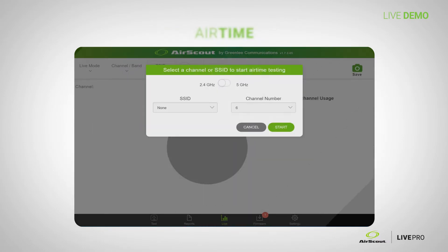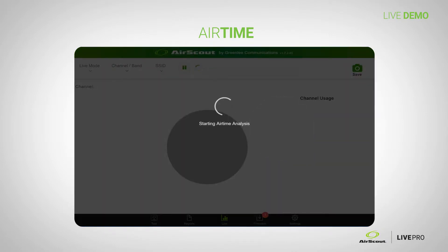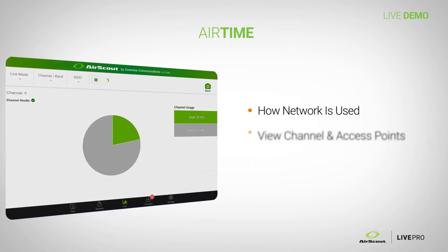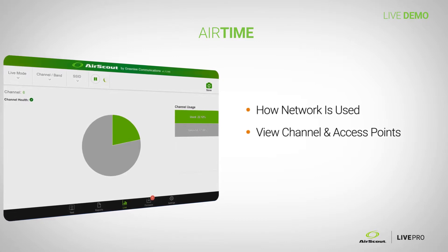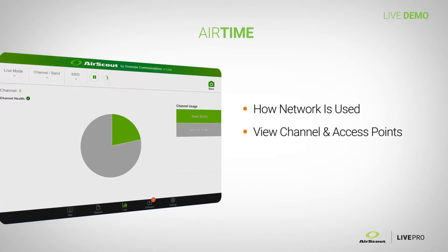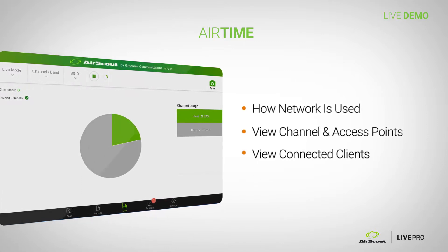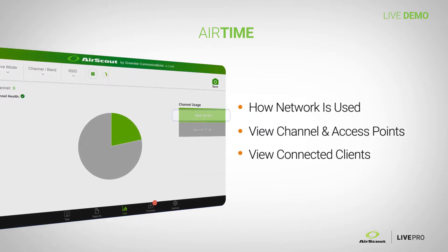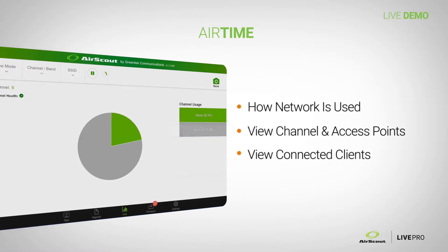We'll start with airtime. The first thing it's going to ask you is to pick an SSID or a channel number — both of those are the same thing. We'll choose channel six here. Airtime analysis allows you to look at how your network is being utilized and by what. It allows you to look at a channel, all the access points on that channel, and all the clients connected to a specific access point. On channel six, 22% is being used and the rest is unused.